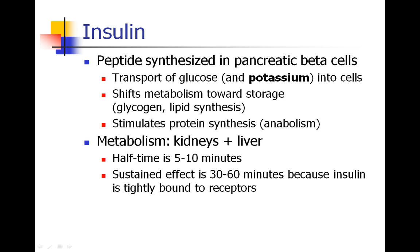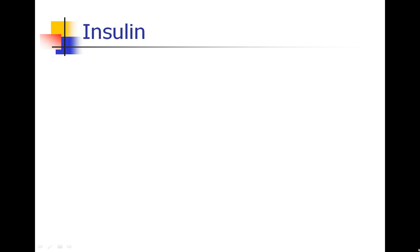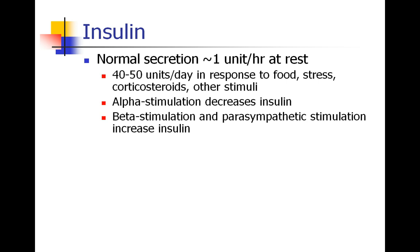However, insulin has a clinical effect of more like 30 to 60 minutes, because the insulin is so tightly bound to its receptors that it stays there for quite some time before it's released and metabolized. Your body makes insulin at a rate of about 1 unit per hour at rest, but food, stress, steroids, and other stimuli cause additional release. If you have alpha stimulation from certain kinds of stress, that can decrease insulin production, whereas beta and parasympathetic stimulation tend to increase insulin secretion.